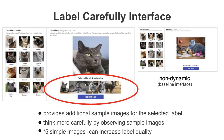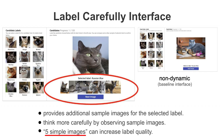The Label Carefully interface is also very similar to the baseline interface. The only difference is that the interface provides additional sample images for the selected label. After selecting a label for the target image, it shows five sample images of the selected label. This allows the user to think more carefully by observing sample images before moving to the next image. We define this as the Label Carefully style, and we believe that this can increase label quality when the data is difficult.